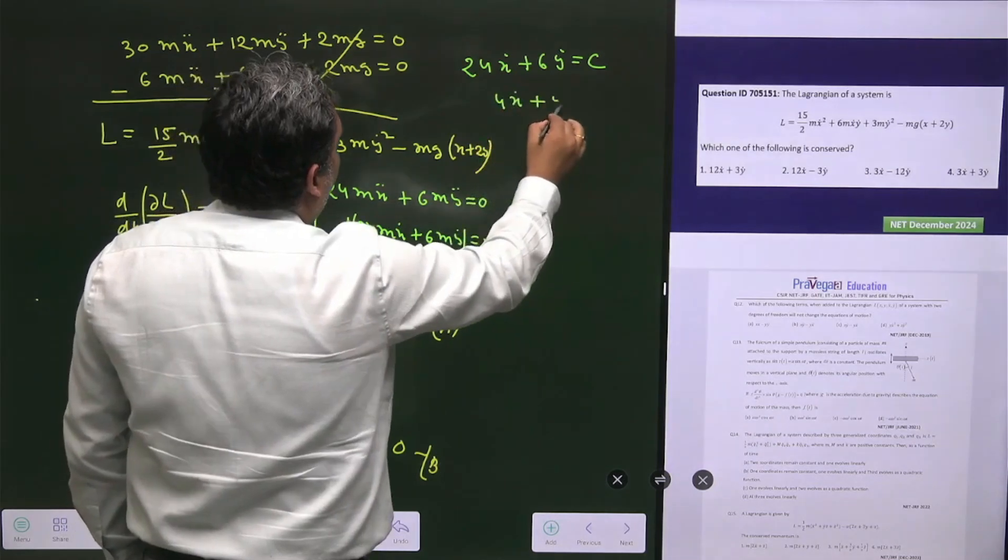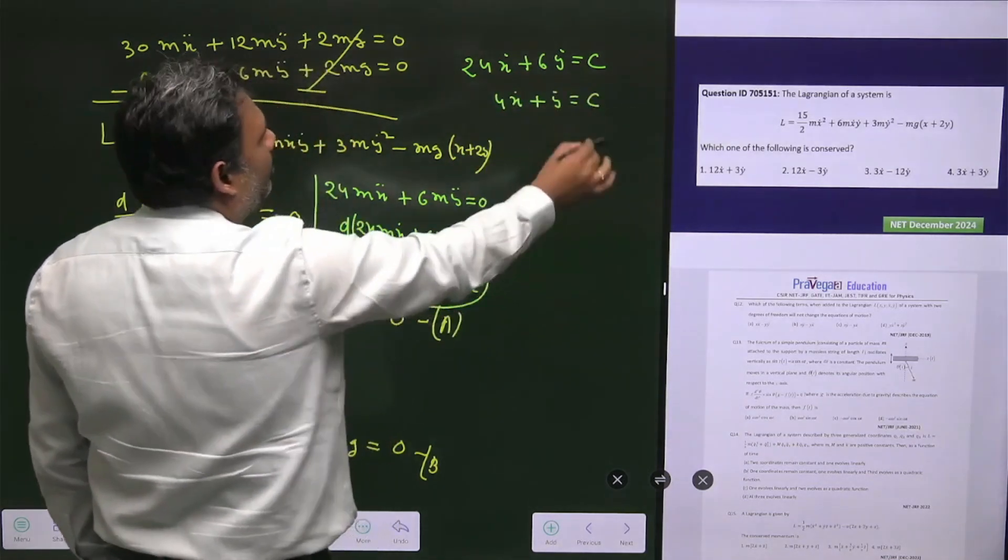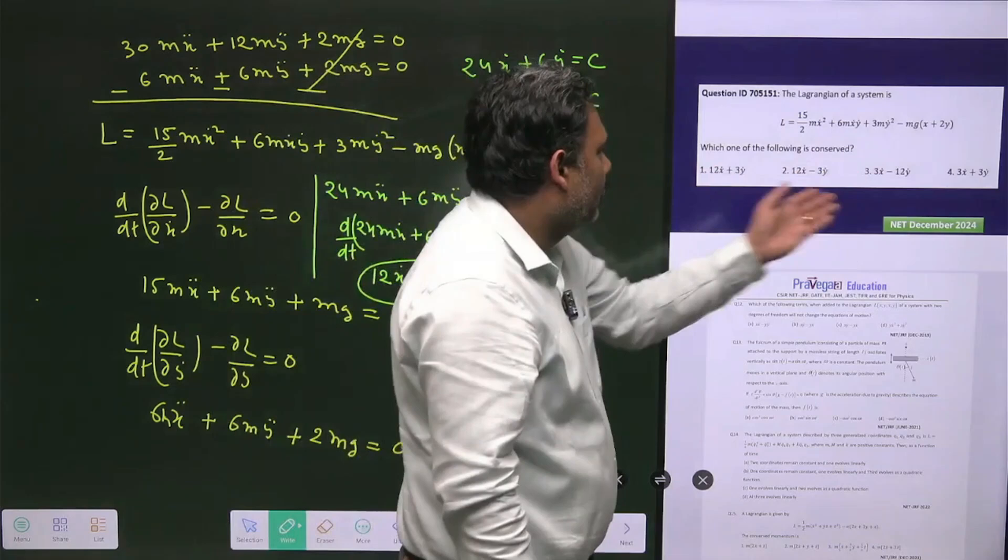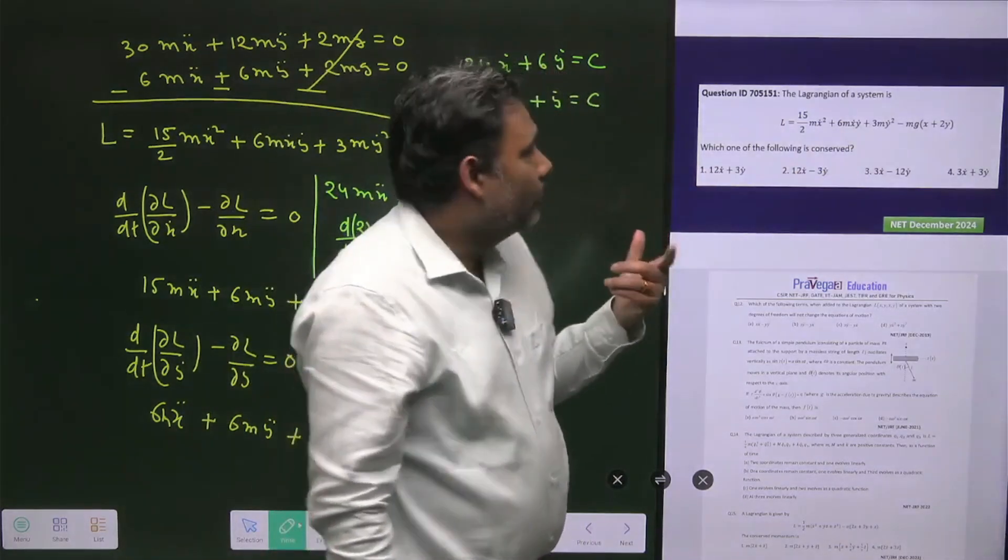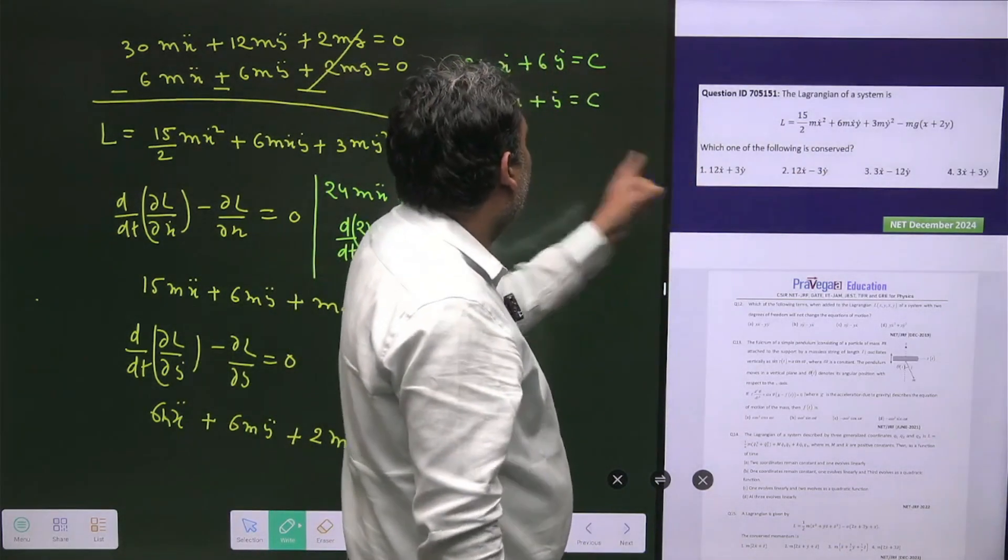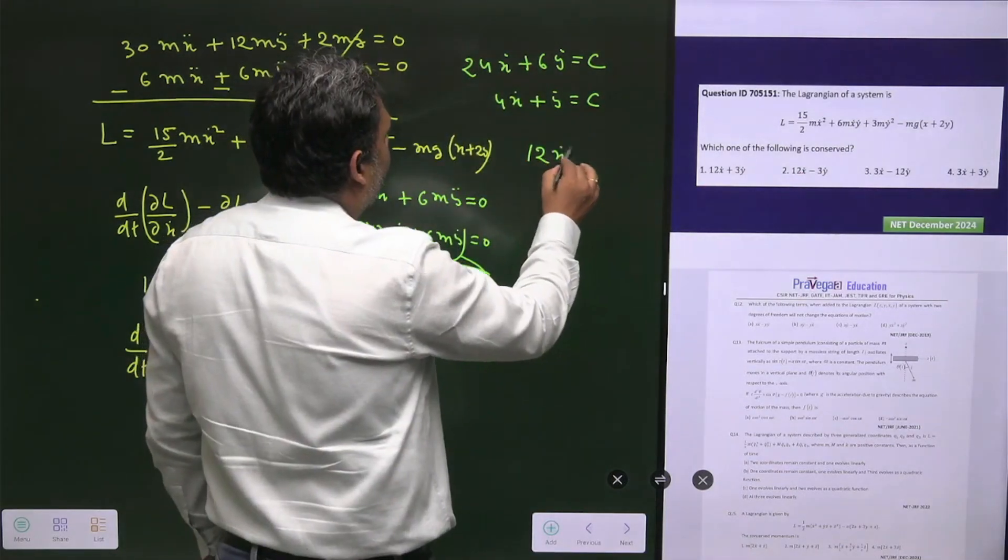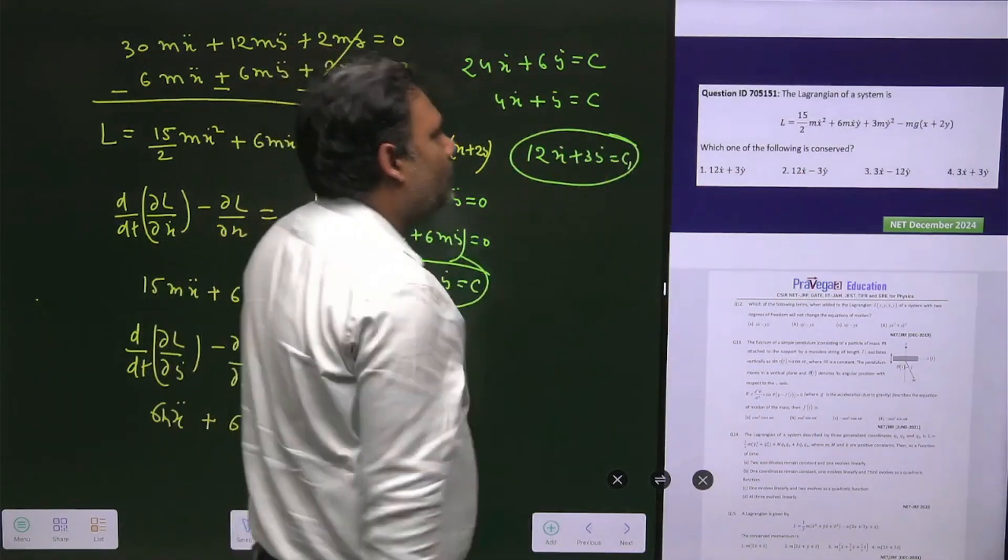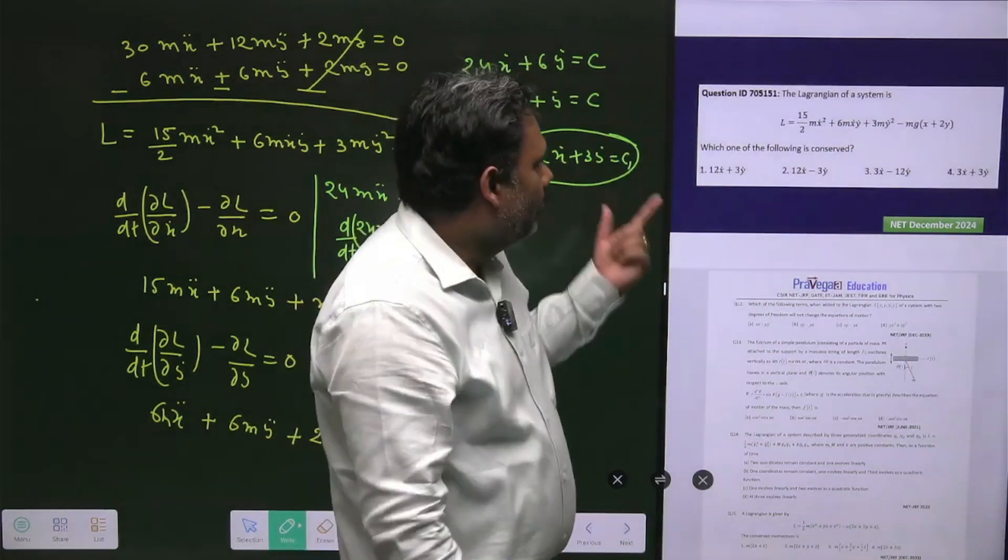If you take 6 common, you have 4ẋ + ẏ constant. You can see not any option is going to match, so there may be some confusion. But if you multiply everything with 3, you have 12ẋ + 3ẏ = constant, which is conserved. Option number 1 is correct.